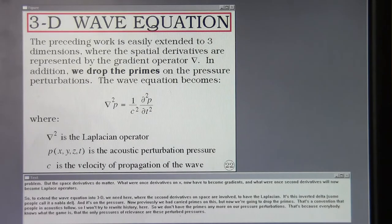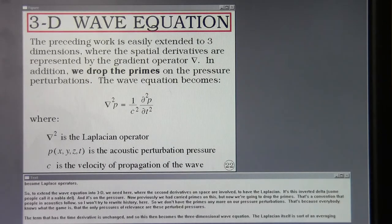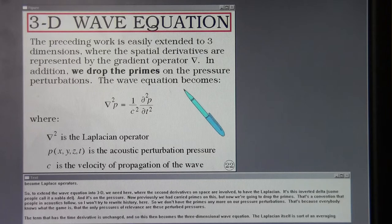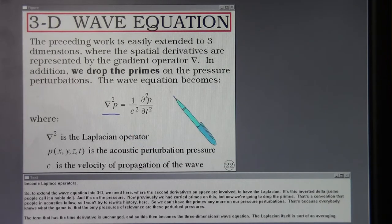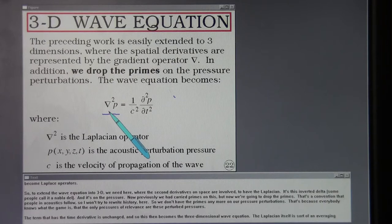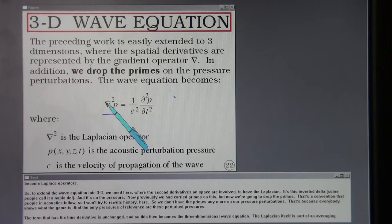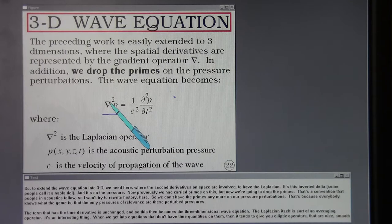So to extend the wave equation into 3D we need here where the second derivatives on space are involved to have the Laplacian. It's this inverted delta. Some people call it a nabla del. And it's on the pressure.